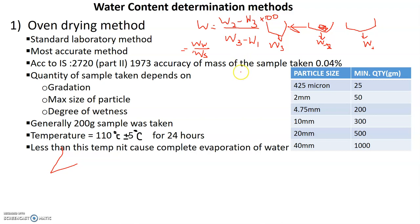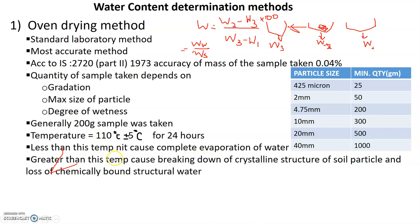For the oven drying method, the particle size is 4.75 mm and generally 200 g of sample is used. The temperature is 110 to 115 degrees Celsius for 24 hours in the oven lab. A temperature higher than this would cause breaking down of the crystalline structure.